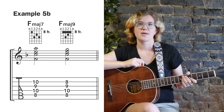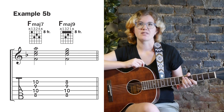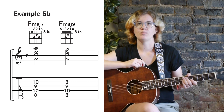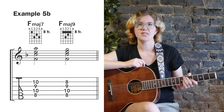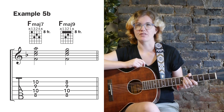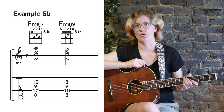Example 5b is another example of a movable shape, as it's simply the voicing from example 4 moved up one fret to get F major 7. In this case we're leaving out the low open E string, as that doesn't fit in the chord.